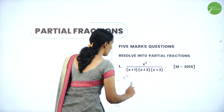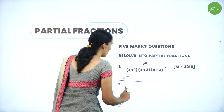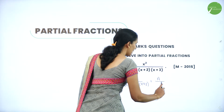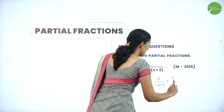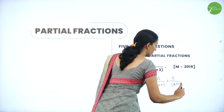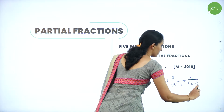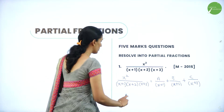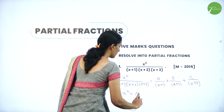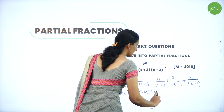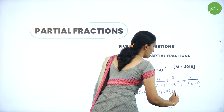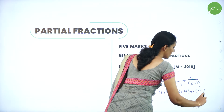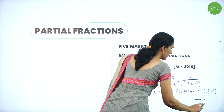Therefore, x² divided by (x+1)(x+2)(x+3) can be written as A/(x+1) plus B/(x+2) plus C/(x+3). By multiplying the denominator on both sides we get the equation: x² = A(x+2)(x+3) + B(x+1)(x+3) + C(x+1)(x+2). Take this as equation 1.